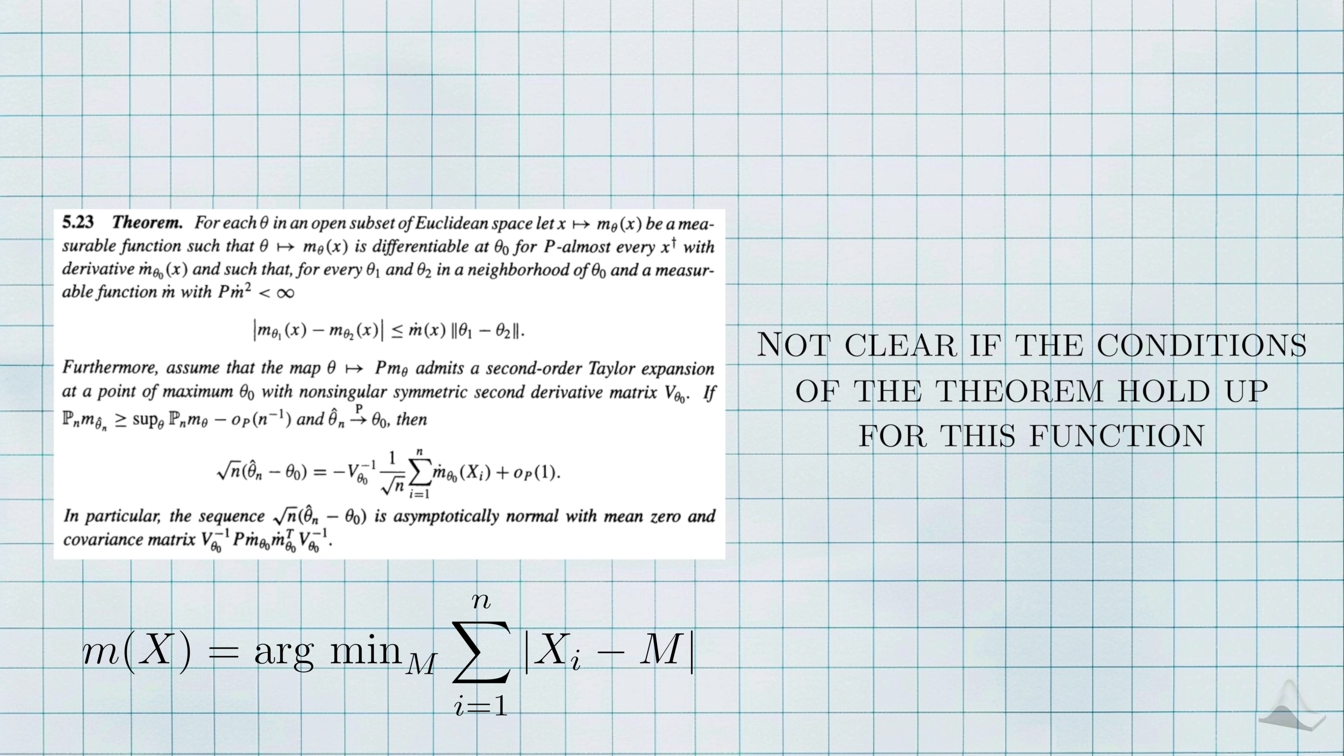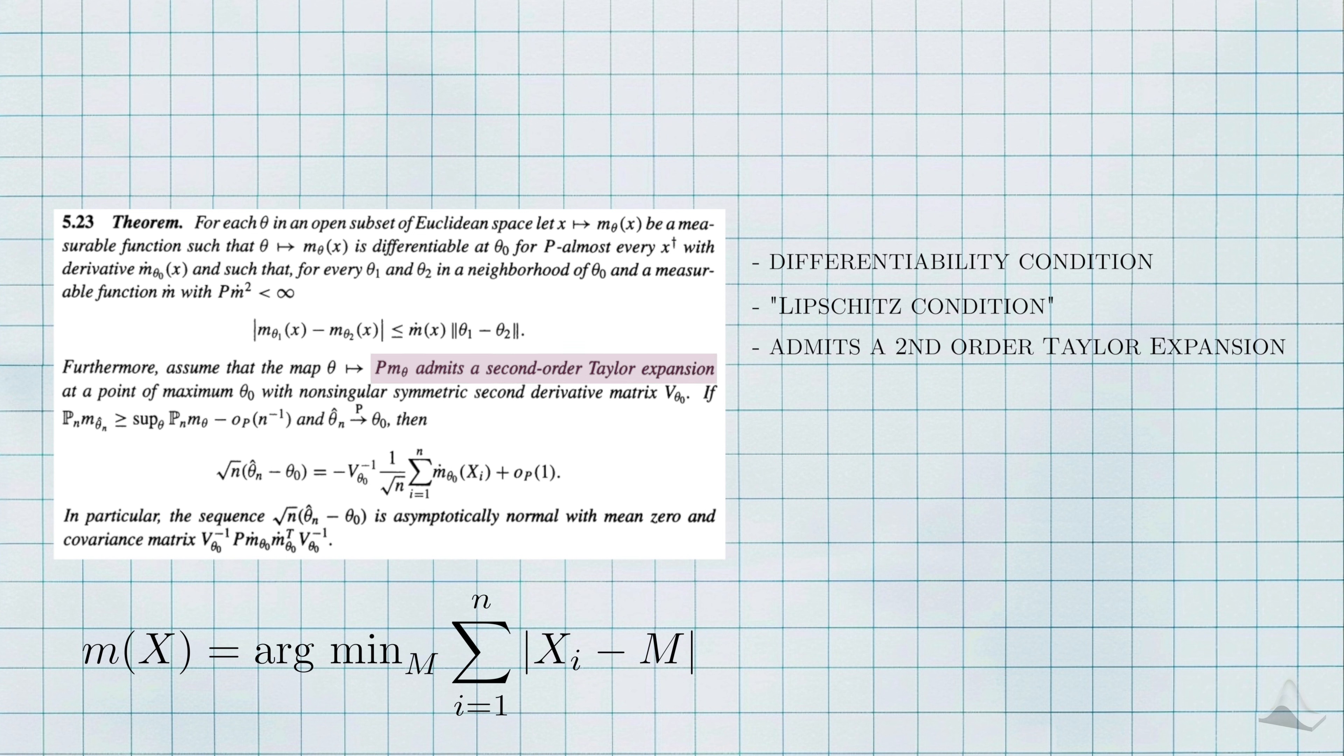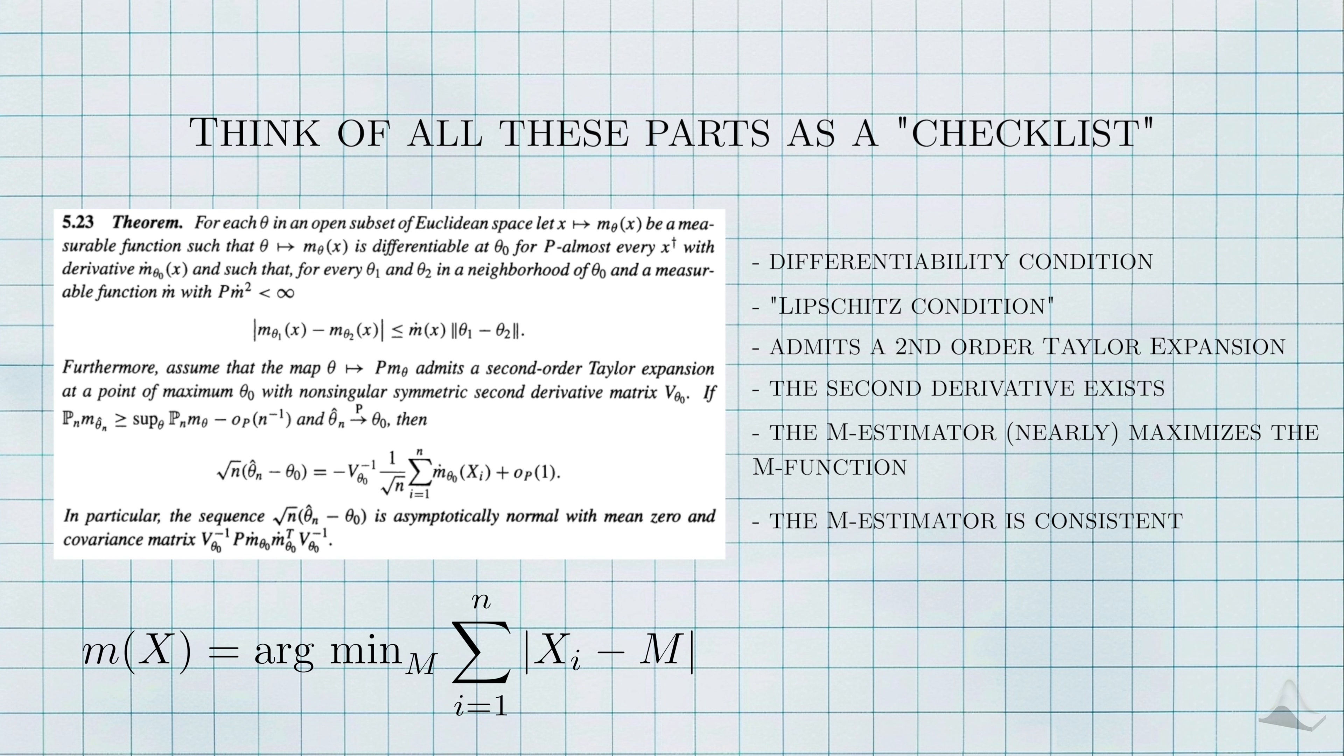Here's a rough look at how it applied to the median problem. In this case, we have a specific m function, and it's not exactly clear if it has the properties specified in the theorem. What were these properties? There's a differentiability condition, and there's something called a Lipschitz condition on the function. Next, you have to make an assumption that the expected value of the m function has a second-order Taylor expansion. Sure, that's an assumption. It also has to have some second-derivative matrix, or in this case, just a second derivative. There's an assumption that the estimator nearly optimizes the m function, and that you know that the median estimator is consistent for the true median.